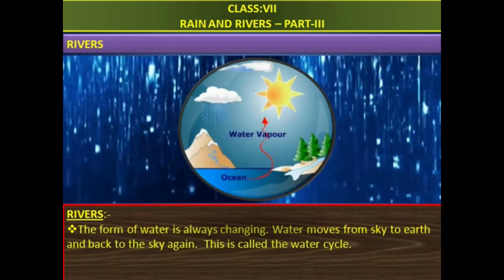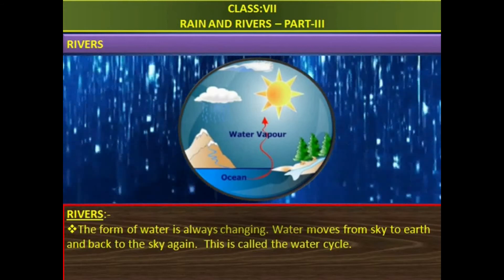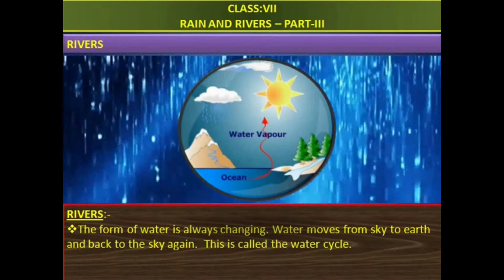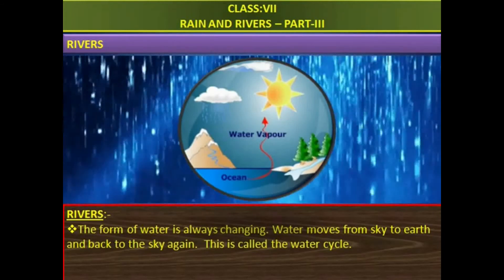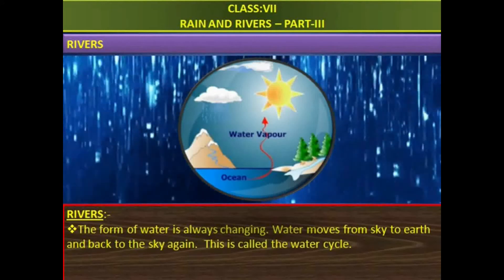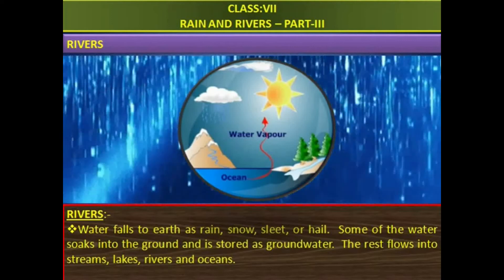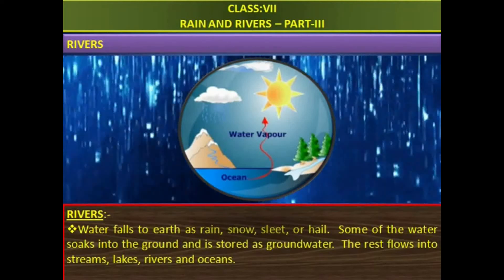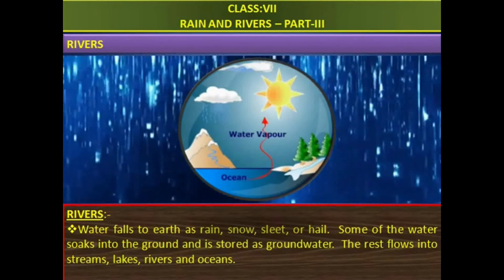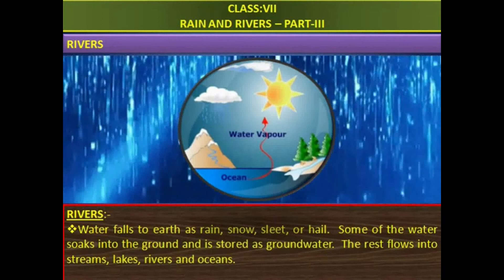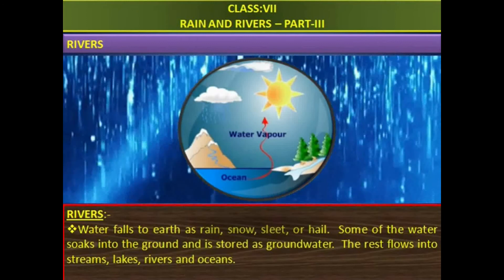Rivers. Dear children, we know that the form of water is always changing. Water moves from sky to earth and back to the sky again. This is called the water cycle. Water falls to earth as rain, snow, sleet, or hail. Some of the water soaks into the ground and is stored as groundwater. The rest flows into streams, lakes, rivers, and oceans.